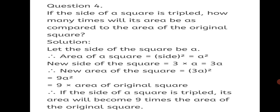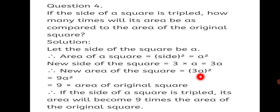Question 4: If the side of a square is tripled, how many times will its area be compared to the area of the original square? First we find the area of the original square, then the area of the square whose side is tripled. Let the side of the square be A. Therefore, area of square equals A squared. The new side is 3 times the original, so new side equals 3A. The new area equals (3A) squared, which equals 9A squared.